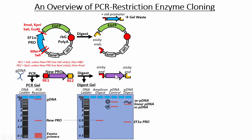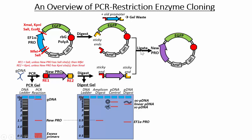Now we have the plasmid backbone and the PCR product, both with matching sticky ends. Mixing these two components together with T4 DNA ligase: the sticky ends will bind to each other first via hydrogen bonds between complementary bases, but those are relatively weak. T4 DNA ligase then forms a permanent covalent bond between the backbones of the two DNA molecules, giving us our new plasmid with the new promoter inserted.